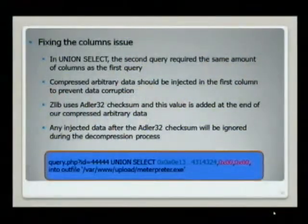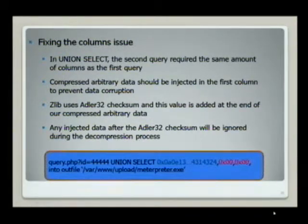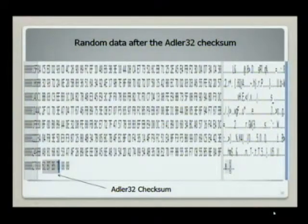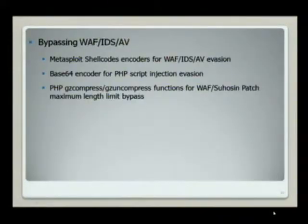The reason for this is that our arbitrary data is compressed using Zlib, and Zlib uses the Adler-32 checksum. This value is added at the end of our data. Per the RFC, anything after the Adler-32 checksum will be ignored during the compression process, so we can simply inject any random data into the second column onward. You can see here my arbitrary data has two null bytes injected after the Adler-32 checksum, and there is no problem when decompressing the file back to its original size.